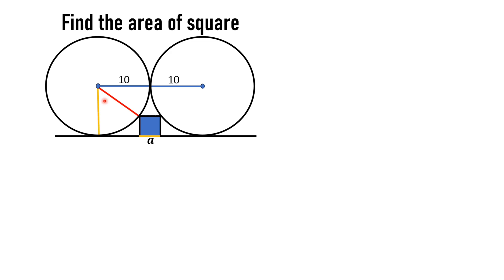Now we draw another line — this is again a radial line. We also draw a line segment and suppose that it has length equal to b. This length b makes an angle of 90 degrees. Since one side of the square is equal to a, all sides of the square are equal to a. This whole radial length is 10 units, and since this portion is a, the remaining length is equal to 10 minus a.